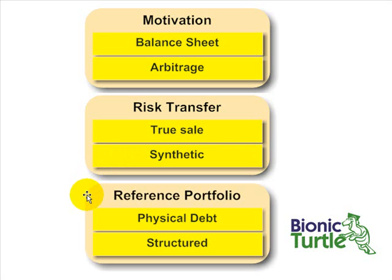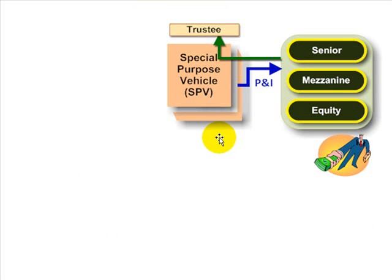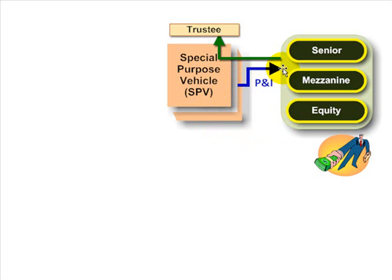The third perspective — and this gives rise to the alphabet soup — is: what is the nature of the reference portfolio? Is it physical debt, as in bonds or loans, or is it structured debt? In all cases, for the CDOs that we've looked at, what they all have in common is a group of investors. The investors are not homogeneous. They are issued securities by a special purpose vehicle or entity into layers or tranches.